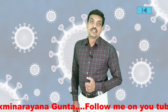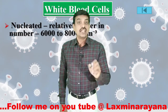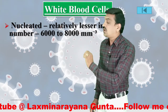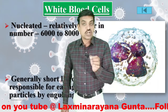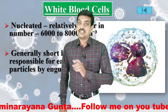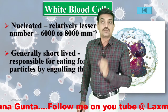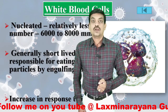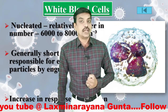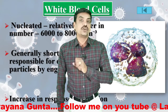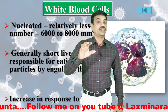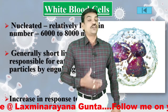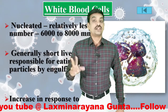White blood cells, or leukocytes, are nucleated cells, relatively fewer in number — only 6,000 to 8,000 per cubic millimeter — when compared with red blood cells, which live for 120 days. WBCs are short-lived cells responsible for engulfing particles. Their number increases during an infection. WBCs are classified into granulocytes and agranulocytes. Granulocytes are further divided into eosinophils or acidophils, basophils, and neutrophils based on their staining properties. Agranulocytes are divided into monocytes and lymphocytes.